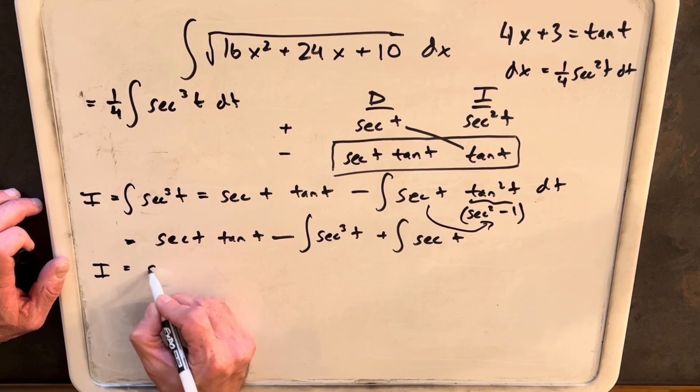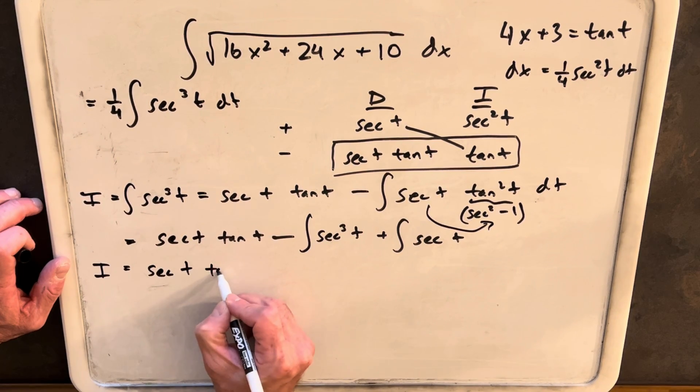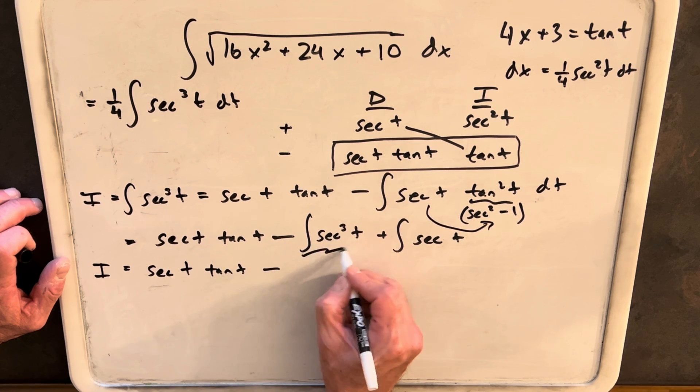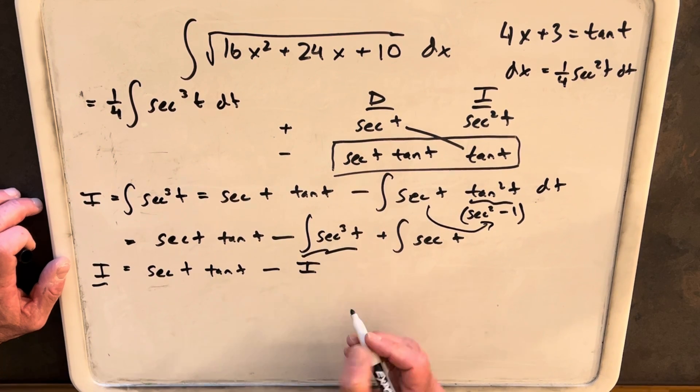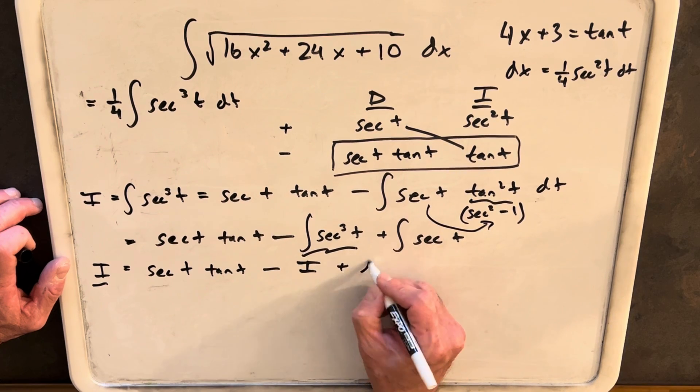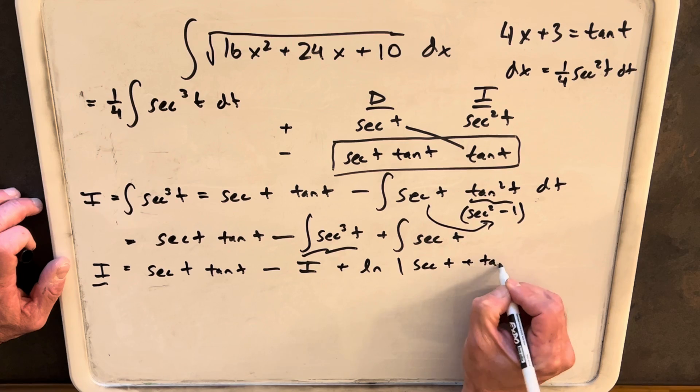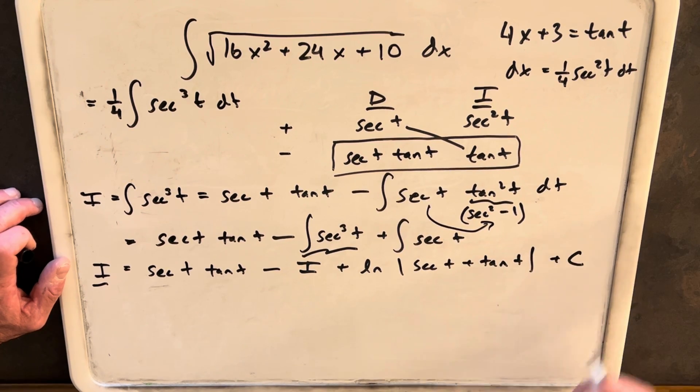So we're going to clean this up and we'll write it again. Our whole integral, i, is going to be secant t tan t minus... This is actually the same thing as this here. So we're going to just rewrite this as i. And then we're going to have this integral, which is going to be ln absolute value secant t plus tan t plus c if you want.